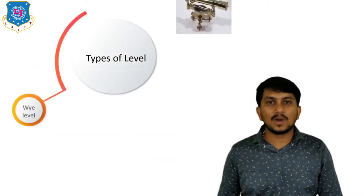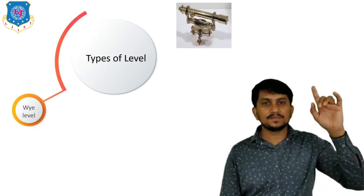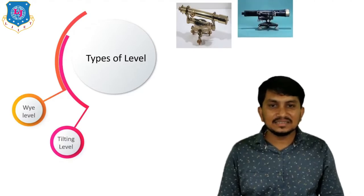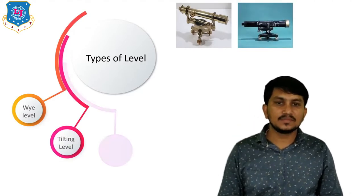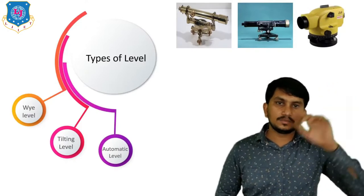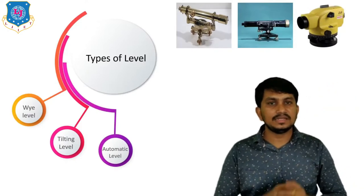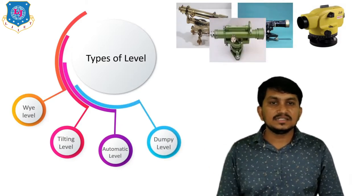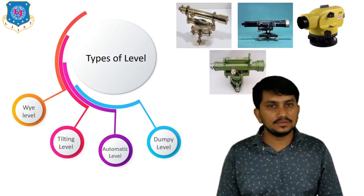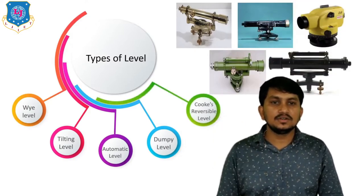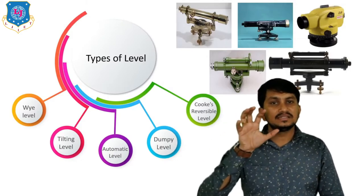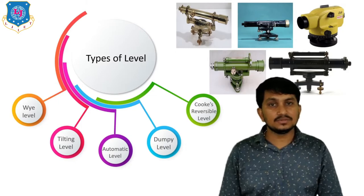The level is of various types. First is the Y-level, because its shape is like a Y. Second is the tilting type of level. Third is the automatic type of level, which is broadly used nowadays. Fourth is the dumpy level, which is the basic instrument used in leveling. Fifth is the Cooke's reversible level.